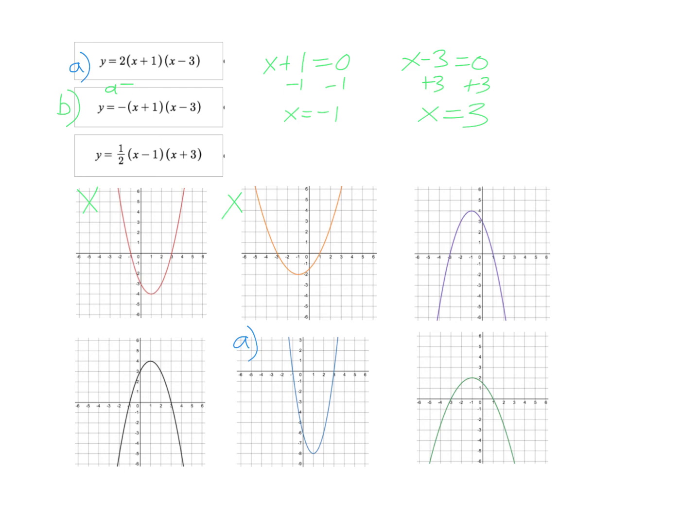Now of the three graphs that we have left here, this one has negative one, positive three. This one has them flipped. Negative three and positive one. That's not gonna work. This one also has them flipped. So it must be this graph right here, the black one.